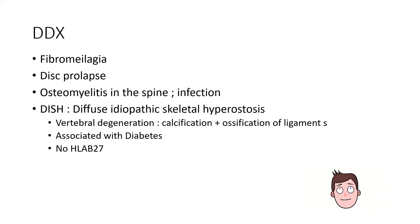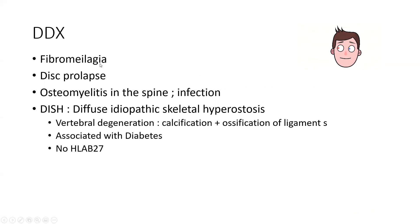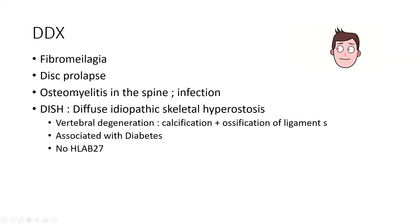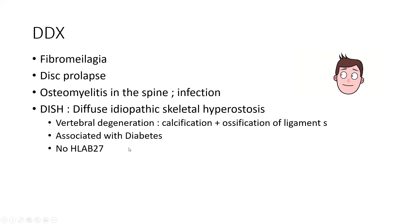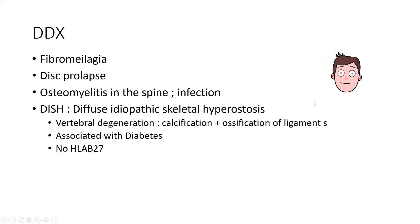The differential diagnosis includes four main conditions: fibromyalgia — hypersensitivity to pain without X-ray changes; disc prolapse — spine pushing out due to arthritis or injury; osteomyelitis — infection of the spine; and DISH (Diffuse Idiopathic Skeletal Hyperostosis) — hyperossification of the spine classically associated with diabetic patients, with no HLA-B27 but with ligament calcification and ossification similar to AS.